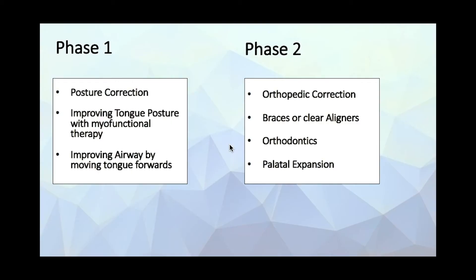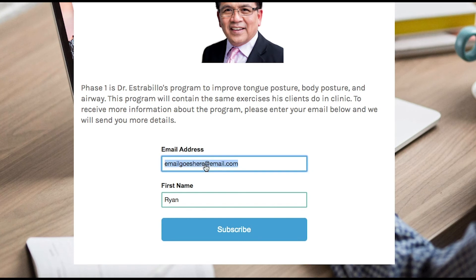When Dr. Ester Below talks about Phase 1 and Phase 2, Phase 1 is about posture correction and improving tongue posture — things you can do on your own. He will be offering an online 16-week program teaching Phase 1, including myofunctional therapy, posture correction exercises, and stretches used with his clinic clients. For Phase 2 — correcting an overbite or performing an expansion — you'll need to see a physical orthodontist. If you're in Canada, you can see Dr. Ester Below; otherwise, click the link in the description to receive more information.